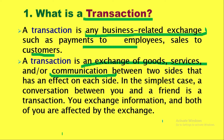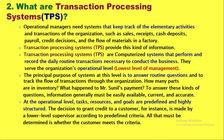Every transaction processing system basically keeps track of all the transactions. Operational managers need transaction processing systems because they keep track of all the elementary activities — jitney bhi operational level par activities hoti hain — such as sales, receipts, cash deposits, payroll, credit decisions, and flow of materials in a factory. For example, in a fridge manufacturing company, tracking how many fridges of which model were sold on a daily basis is one such elementary activity.